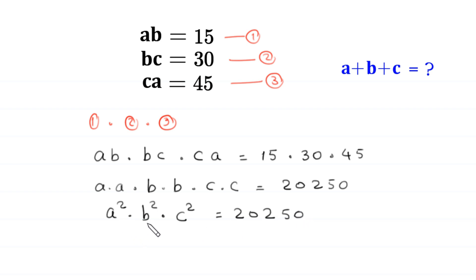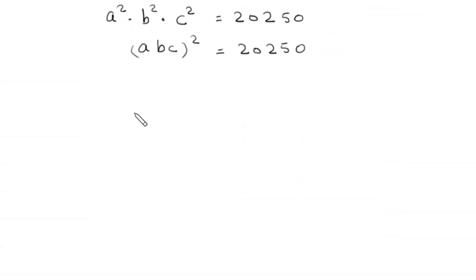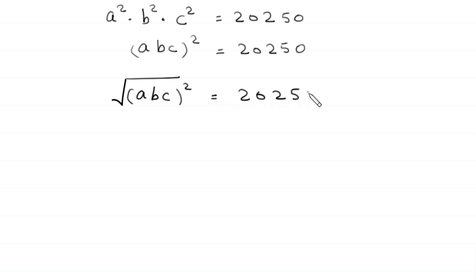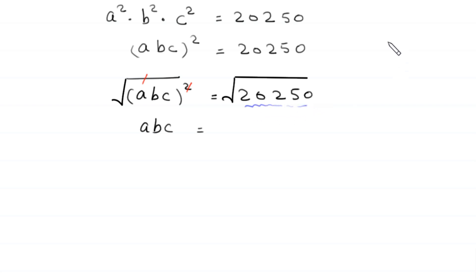Now, A squared times B squared times C squared is equal to 20,250. This can be written as (A·B·C) whole squared is equal to 20,250. Now, from here we take the square root of both sides, so A times B times C is equal to the square root of 20,250. We factorize 20,250.